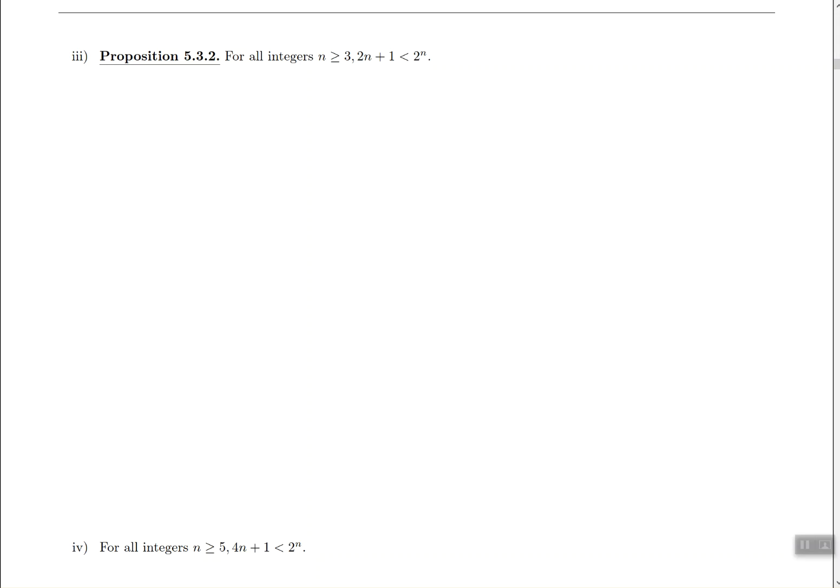Okay folks, so we've made it to proposition 5.3.2, which says for every integer n greater than or equal to 3, we must prove that 2n plus 1 is smaller than 2 to the power of n. So the proof is going to be a proof that relies on induction, so proof by induction. And we're going to start by saying let n be an integer where n is greater than or equal to 3.